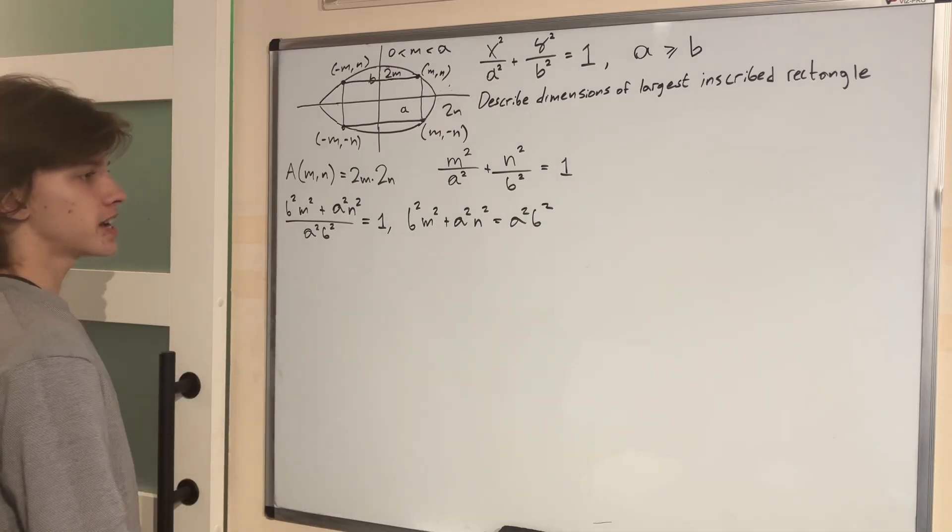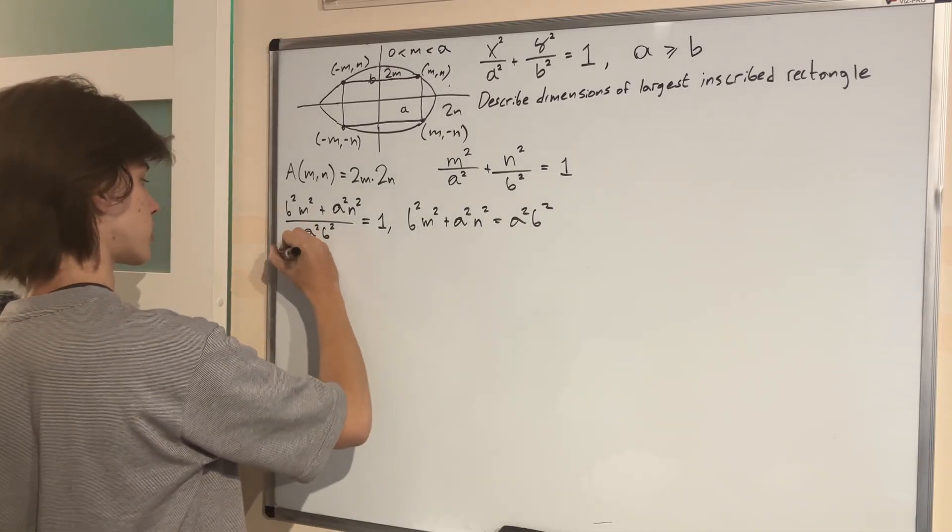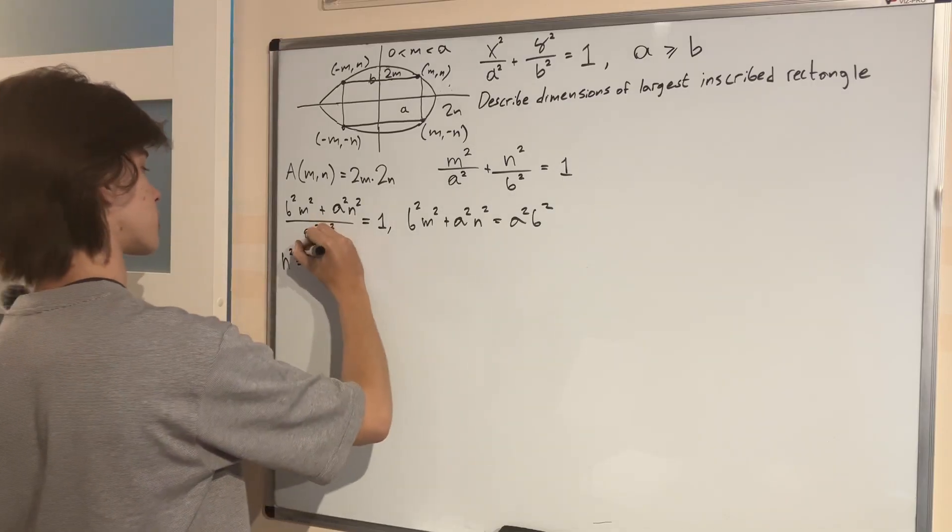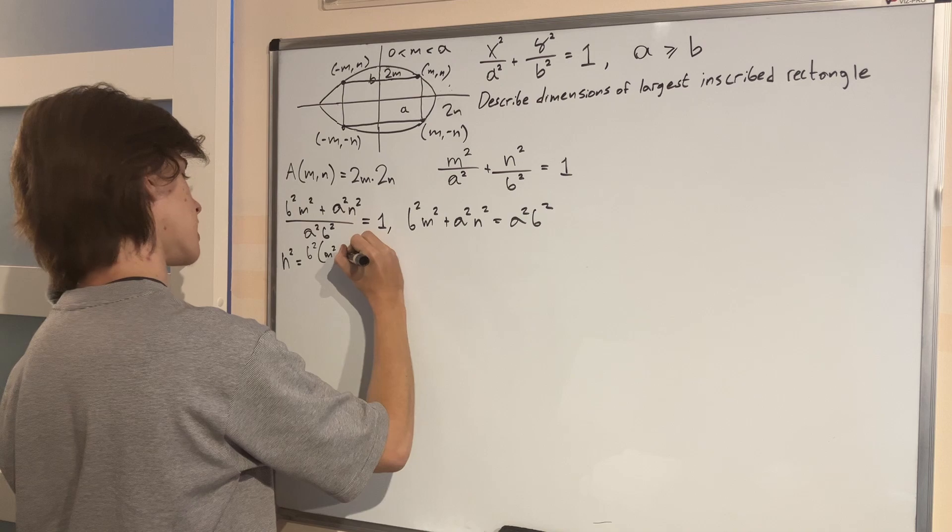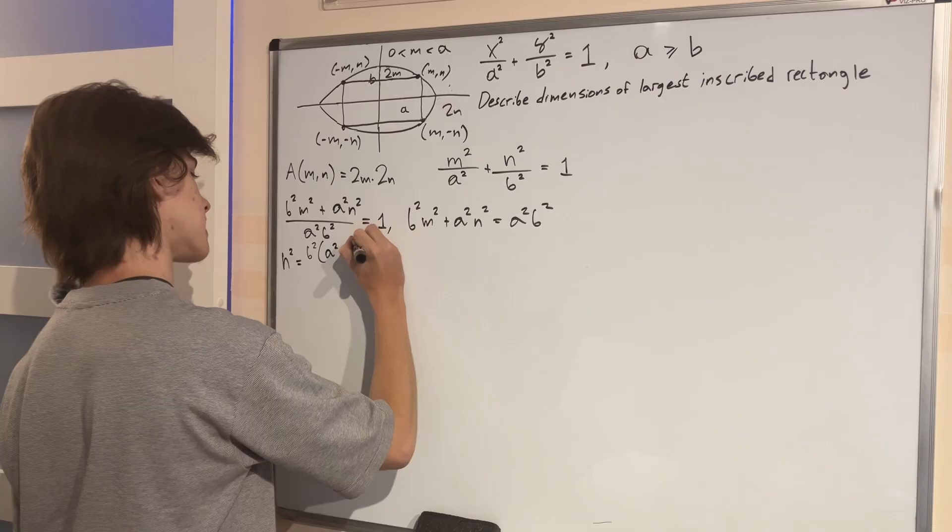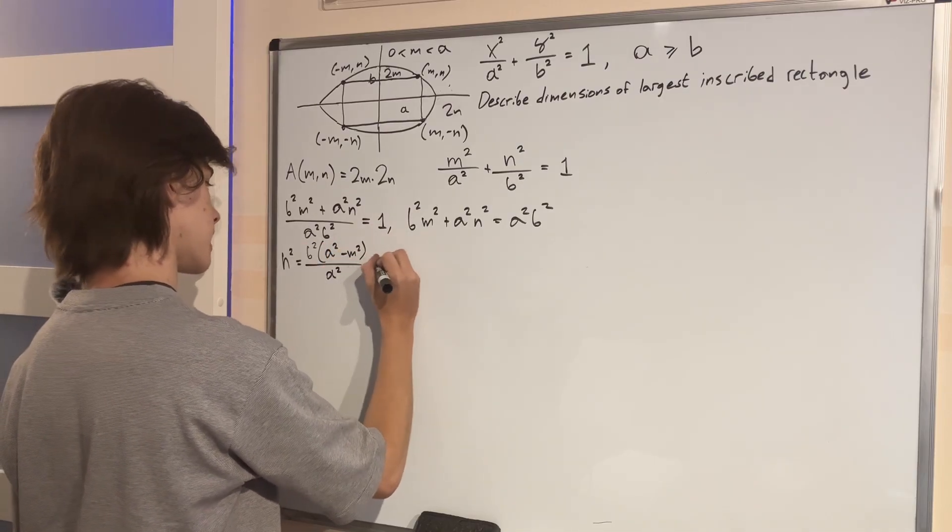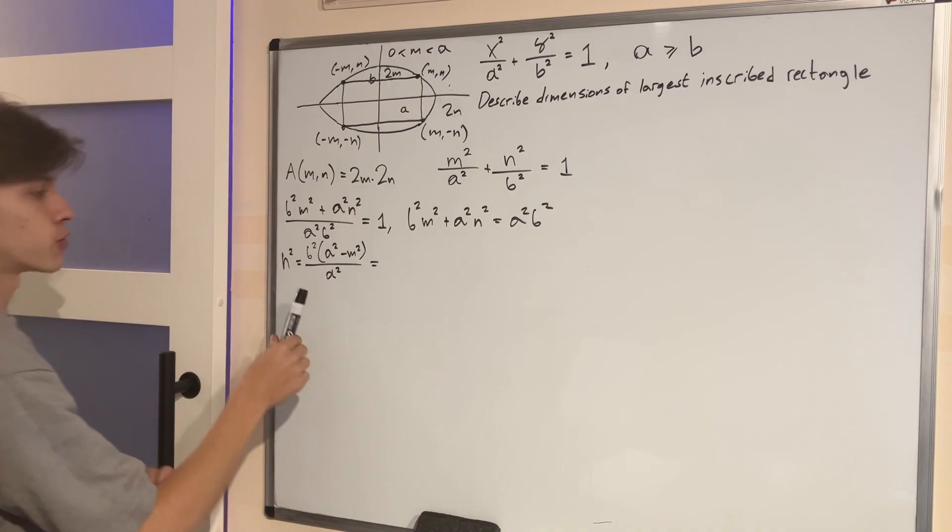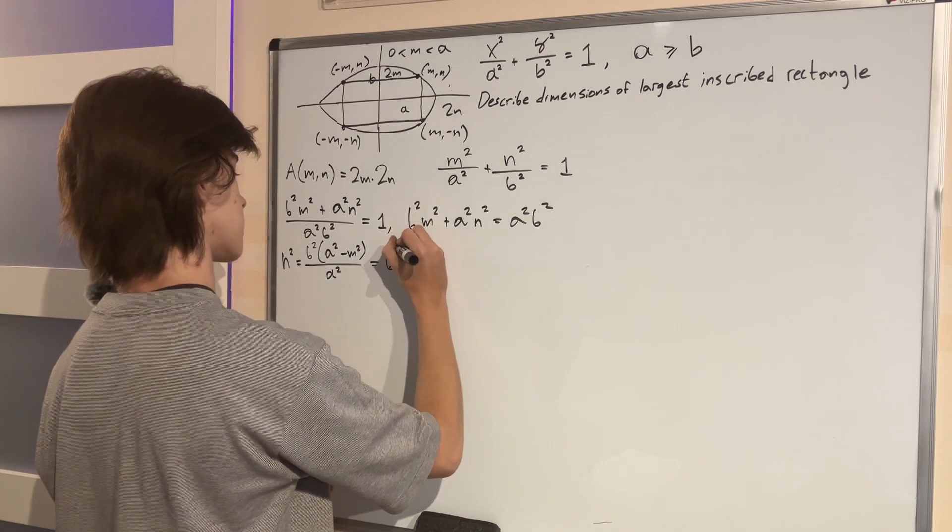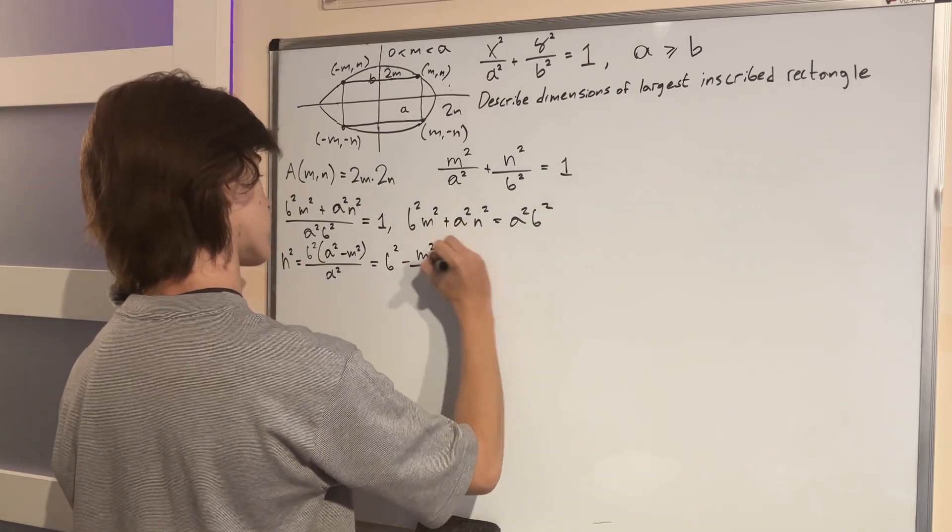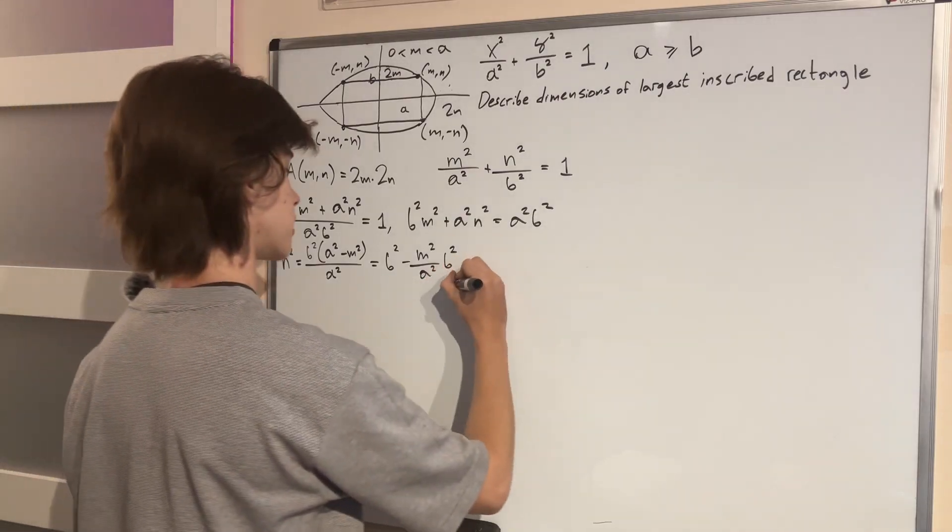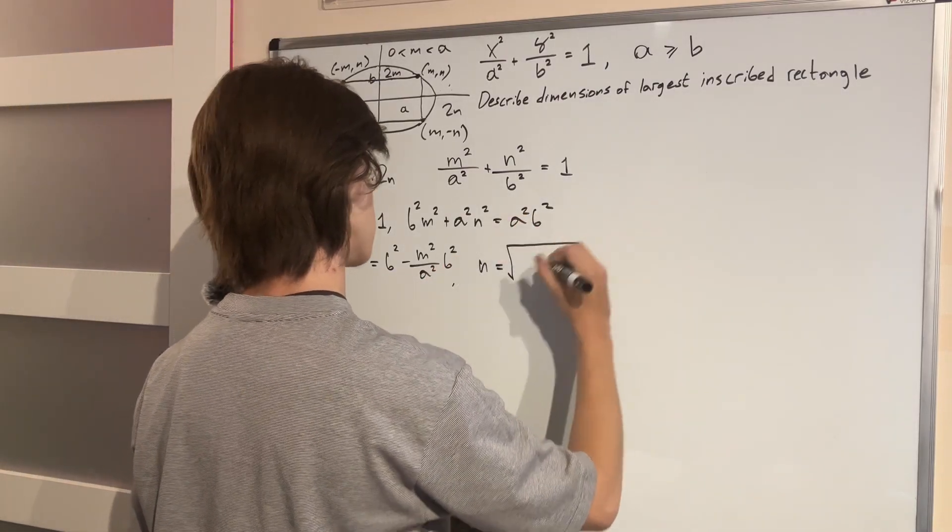And now remember, we want to express N so we can move over this, we can instantly factor and divide by A squared in order to get A squared N squared equals B squared times A squared minus M squared. And we're going to divide this by A squared. I guess factoring is not necessary and we get B squared minus M squared over A squared times B squared. I think I like this form the best for our purposes, and therefore N is simply going to be the square root of this.